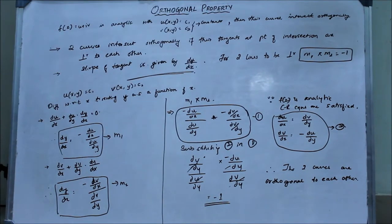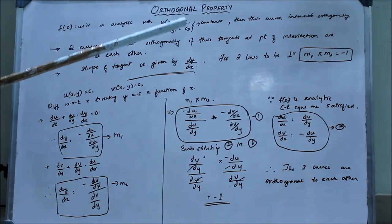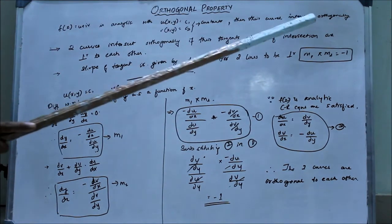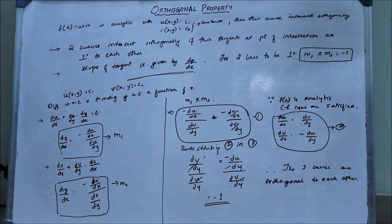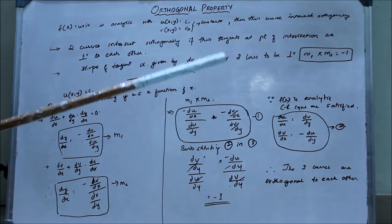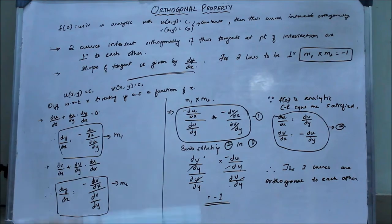We need to show that these two curves, curve 1 and curve 2, intersect orthogonally. There are two points we need to remember. Two curves are said to intersect orthogonally if their tangents at the point of intersection are perpendicular to each other.